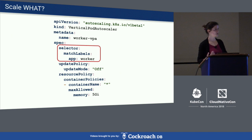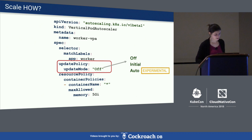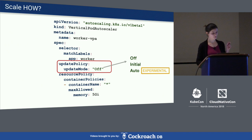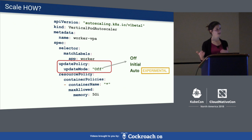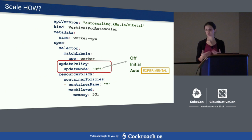The VPA spec is the way for you to provide information on what and how you want to scale. This example spec vertically scales a worker deployment. The selector is the 'what to scale' part, expressed as a regular Kubernetes label selector, giving quite a bit of flexibility — you can auto-scale a single deployment, only part of a deployment, or even group two similar deployments and scale them together.